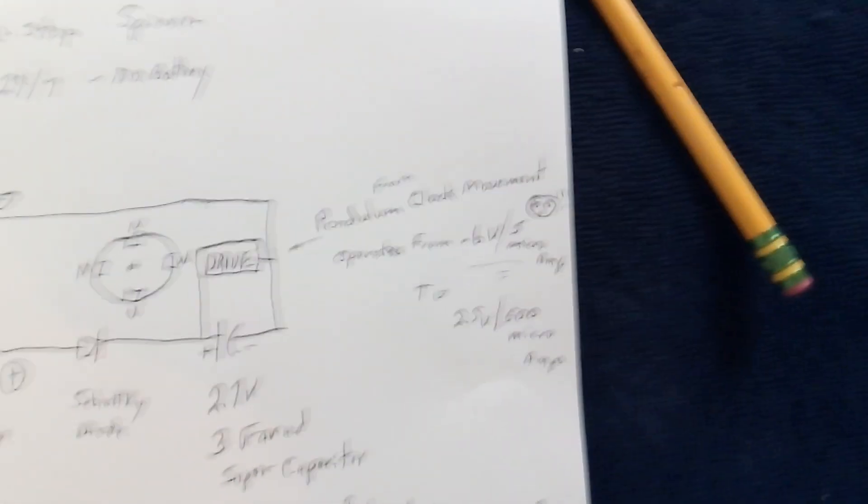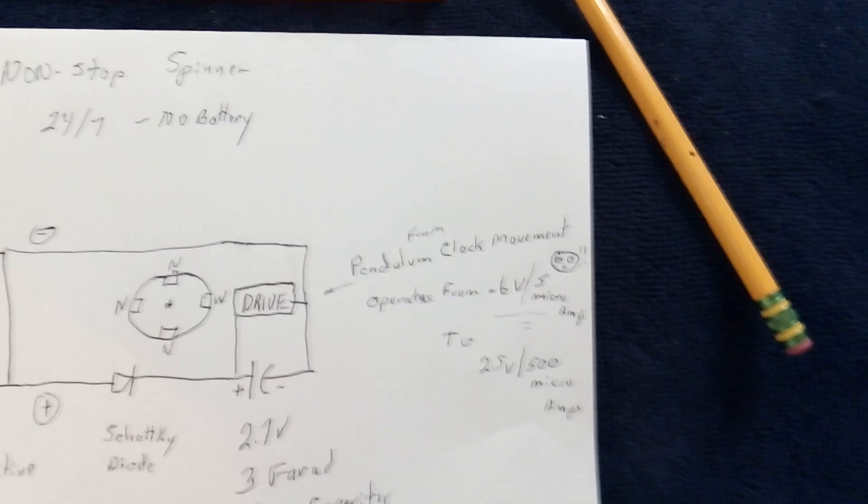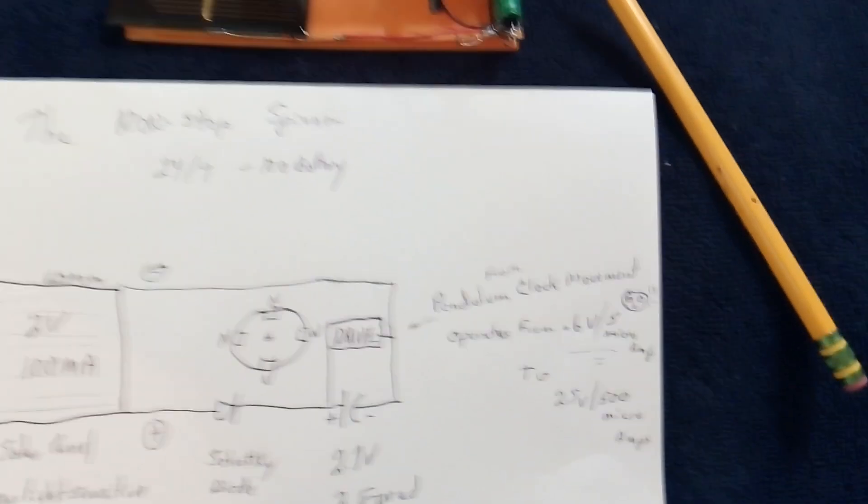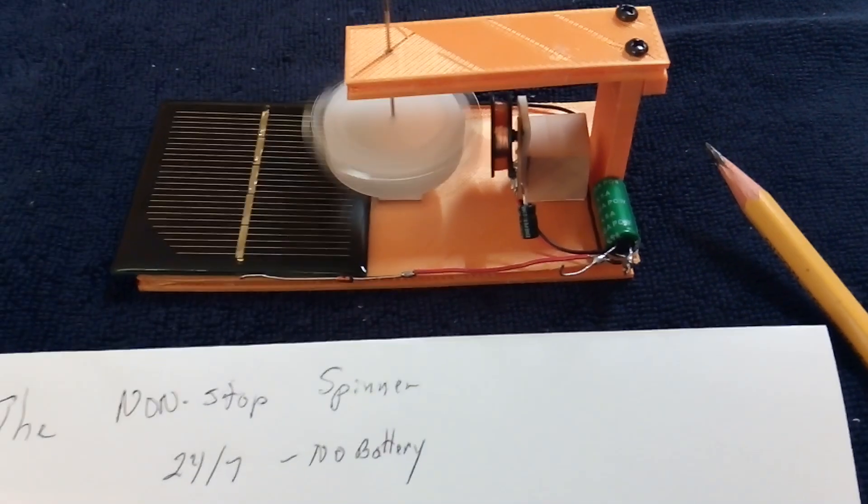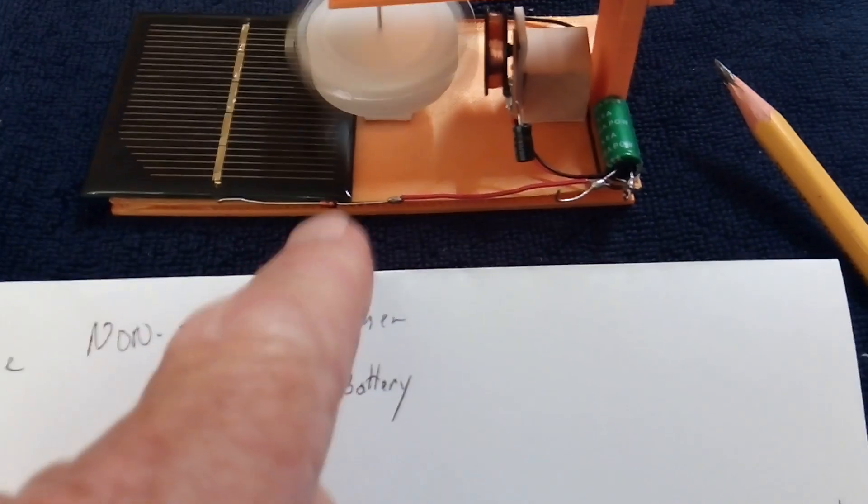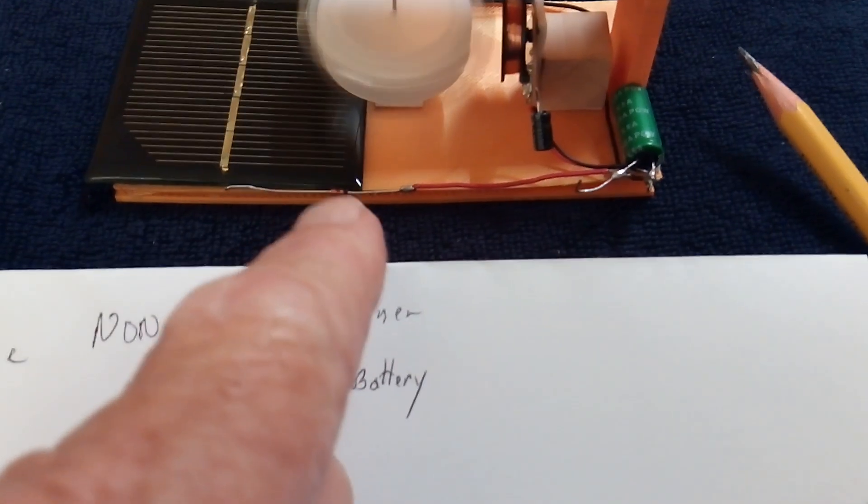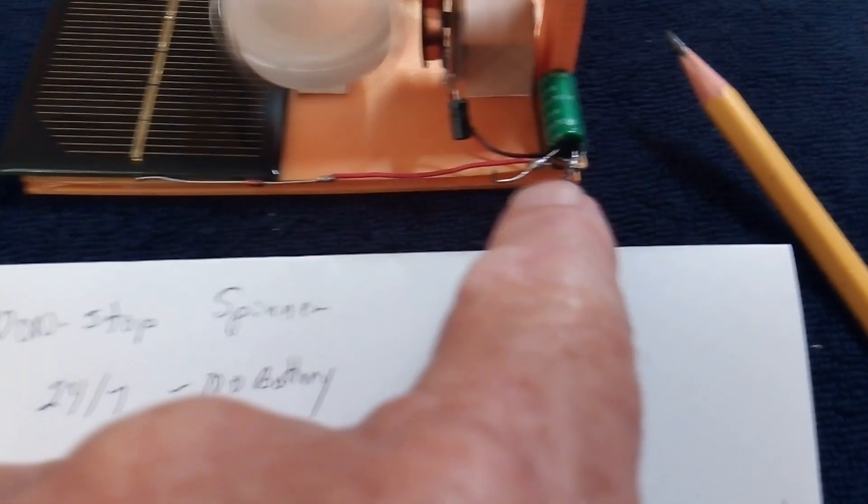I did a video yesterday in the afternoon and then set it up on a shelf and the thing ran 12 hours. So this morning I decided to put a solar panel on it and I'm gonna put a Schottky diode, a low-dropping diode, and then go right into that super cap which is a 2.73 Farad super cap and just make this non-stop spinner 24/7, no battery.